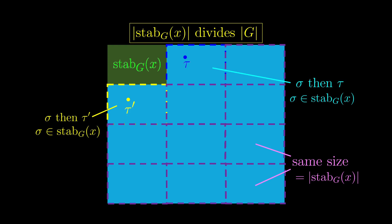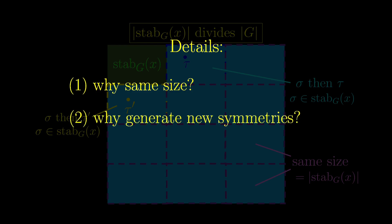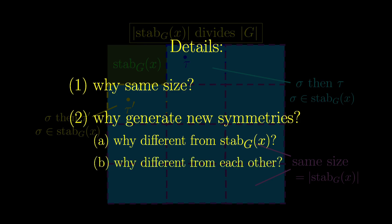That's very intuitive, but there are some details we glossed over. The first is why we generate the same number of symmetries in each process. The second is why we generate new symmetries. This can be further branched out to why these symmetries generated are not already in the stabiliser, and why these generated symmetries are mutually distinct from each other. So for the first detail, we want to know why these generated symmetries have the same size.